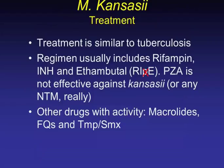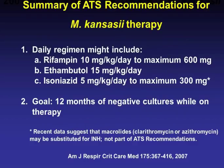For kansasii, treatment is very similar to how we treat MTB. You treat with RIPE but without the P — pyrazinamide is not effective against kansasii or any NTM. Other drugs with activity include macrolides, quinolones, and Bactrim. A typical regimen per guidelines is RIE, with a goal of 12 months of negative cultures while on therapy. Kansasii tends to be very responsive to treatment.